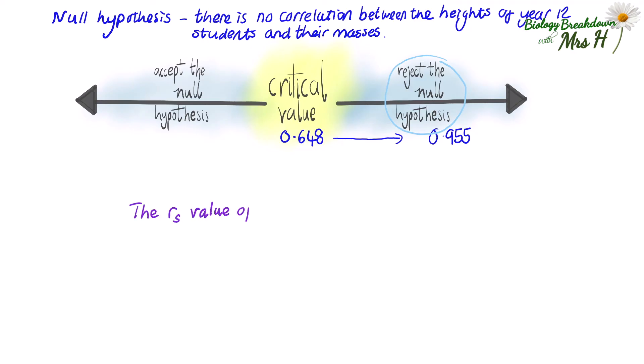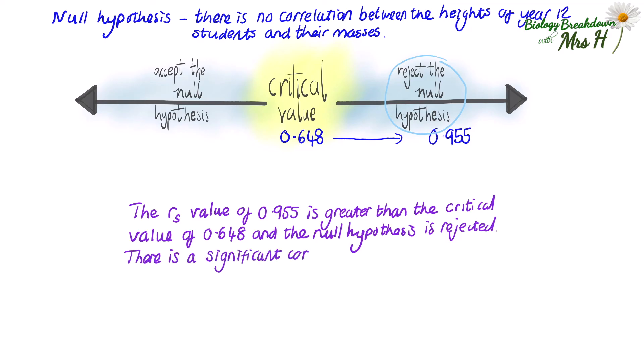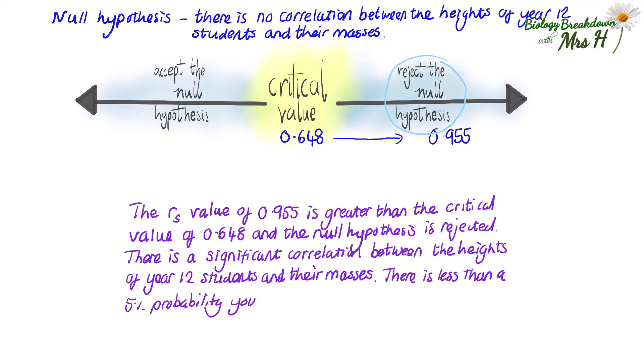The Spearman's rank value of 0.955 is greater than the critical value of 0.648 and the null hypothesis is rejected. There is a significant correlation between the heights of year 12 students and their masses. There is less than a 5% probability you would get these results due to chance.